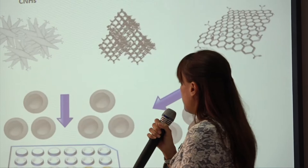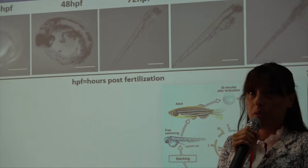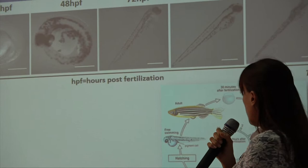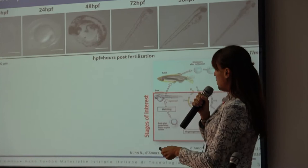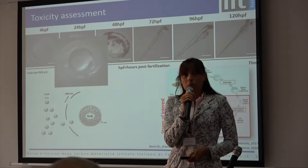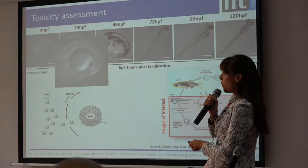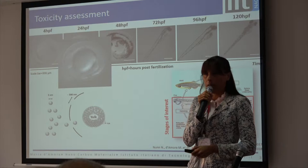Here you can see the optical image of the embryos and larvae at the different stages of investigation. We assessed toxicity on six different stages of development, starting from the gastrula stage until a fully developed zebrafish. As you can see from the optical imaging, at 24 hours post-fertilization, the zebrafish is surrounded by a chorion that acts as a protective barrier from the environment and possesses pores above 500 nm, allowing nanomaterials to enter by passive diffusion.